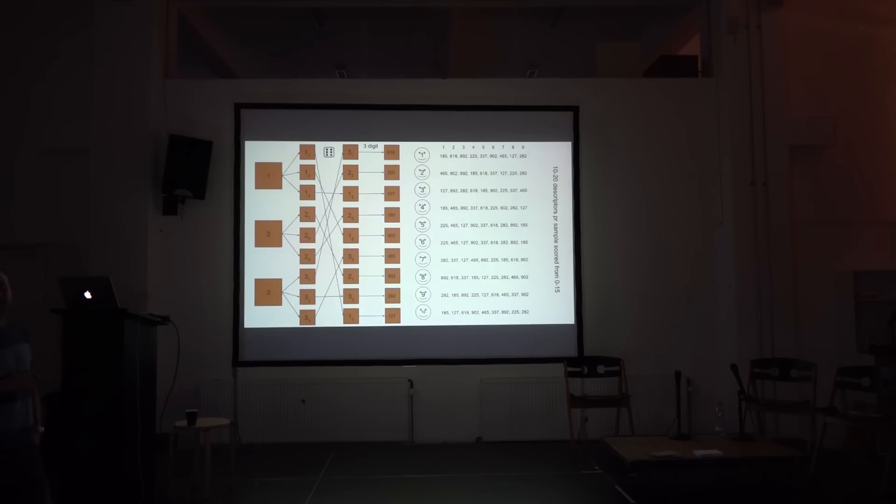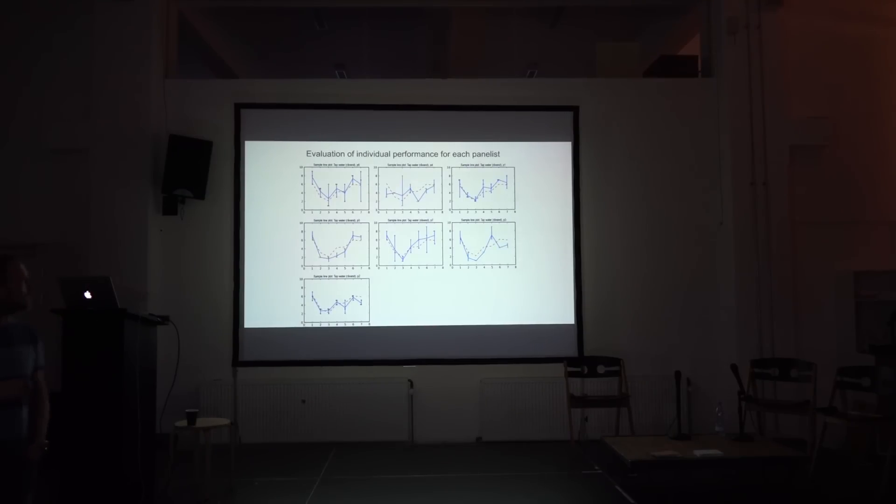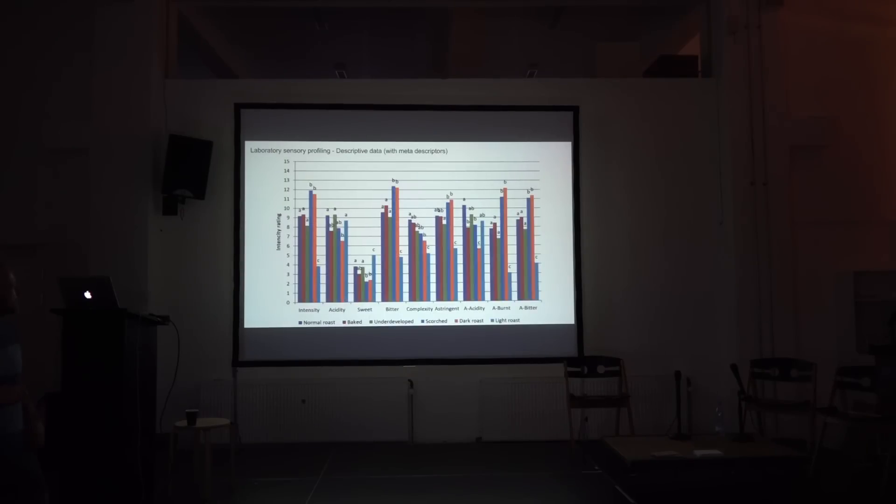These triplicates will then be completely randomized, so there's no sequentiality at all. They'll get a three-digit random number so that all the assessors have got no idea what they are tasting. And each assessor has got their own unique sequence through these samples so that there's no carryover effect and other types of confounders or biases. The interesting thing here is you get information on the food substances, but you can also analyze the panelists' individual performance. So you can see how well they scored the same descriptor on the same food substance the same every time without knowing it.